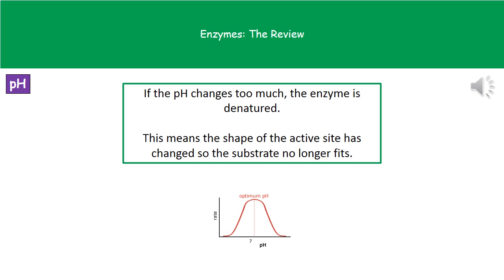Just like with temperature, we can have a similar graph for pH. Looking at the picture at the bottom, you can see it forms a perfect bell-shaped graph. The optimum pH varies depending on which enzyme we're looking at — for example, an enzyme designed to work in the stomach would have a pH of around 2.2. If the pH varies too much from the optimum, the enzyme is denatured, which is why going too high or too low causes a rapid drop-off in activity. The active site changes shape, so the substrate no longer fits.